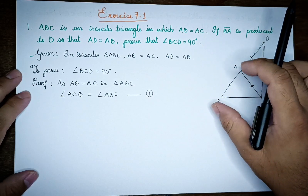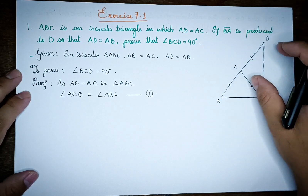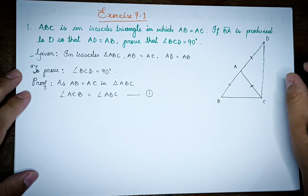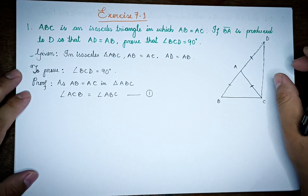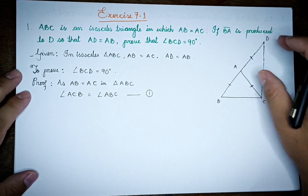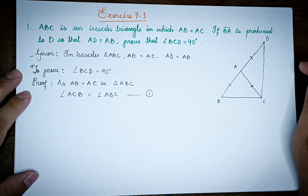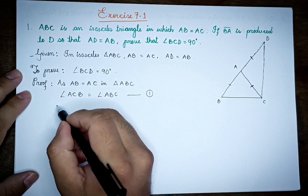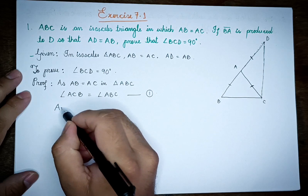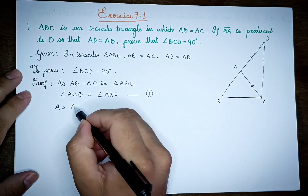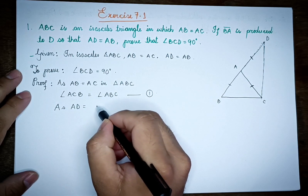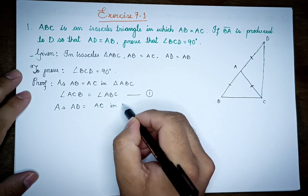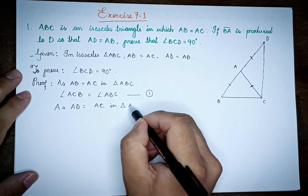Looking at the line AD and AB: AD or AB is the same — AD equals AB, and AD or AC is the same as AD or AC. This is the same as AD is equal to AC in triangle ADC.